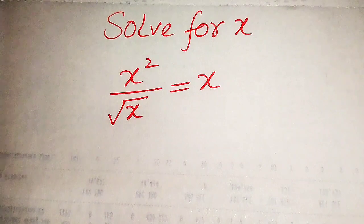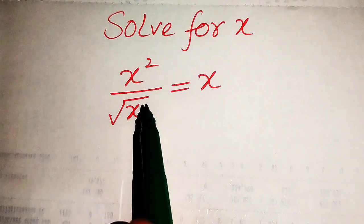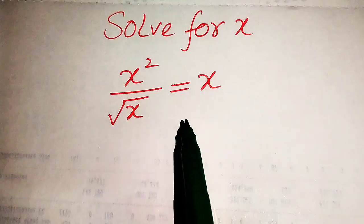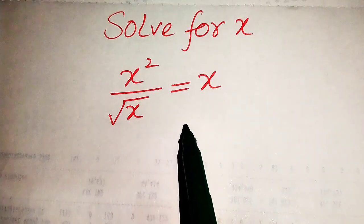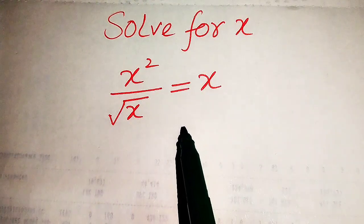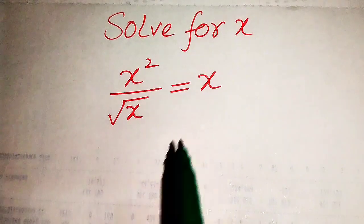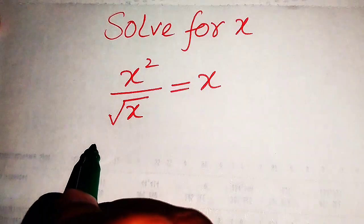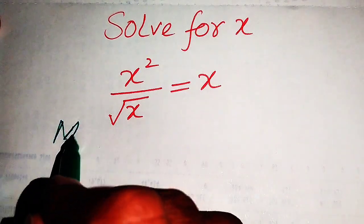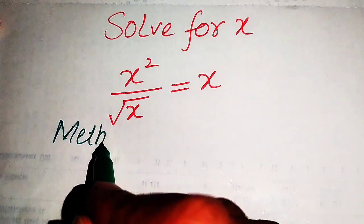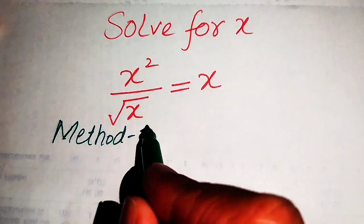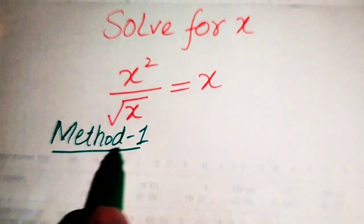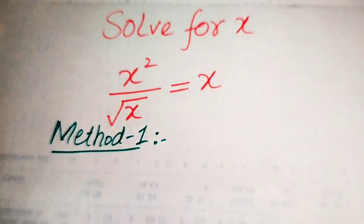Hello everyone. How to solve this problem: for the values of x, if we have x squared divided by square root of x equals x. We will solve this problem for all values of x using two methods. I hope you like both methods, but if you have any other method in mind, please don't hesitate to write it in the comment section.